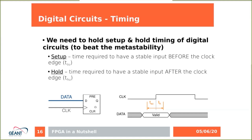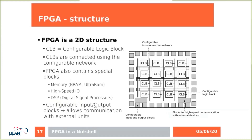Now, how does the FPGA look? It is a 2D structure of configurable logic blocks connected together by a configurable interconnection network. There are also special blocks dealing with input and output from the FPGA, which allow you to communicate with other circuits on the board. Very typically the FPGA also contains some special hard-coded blocks.